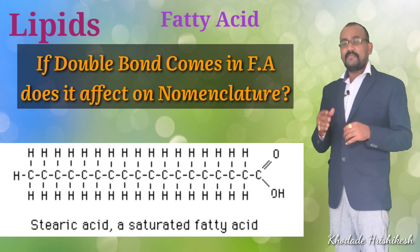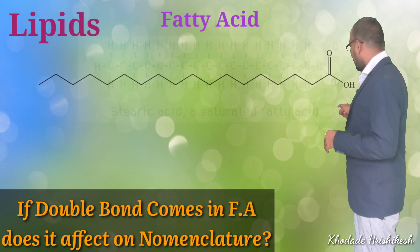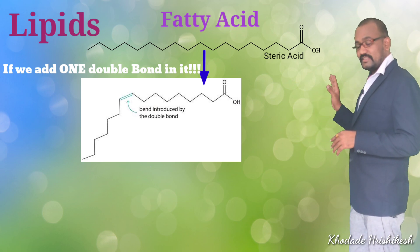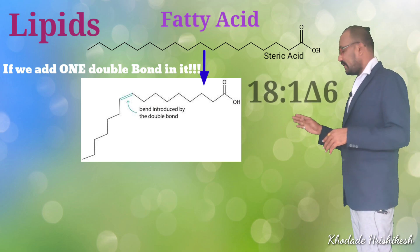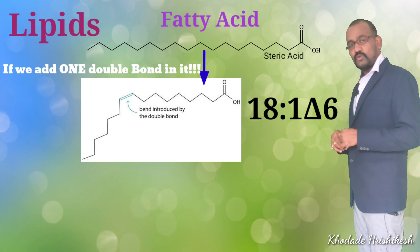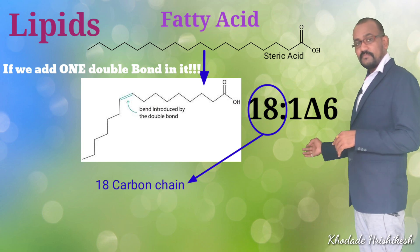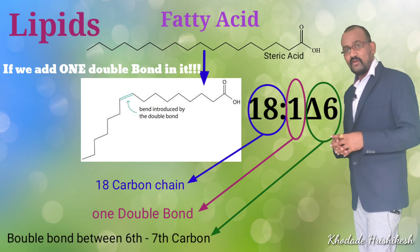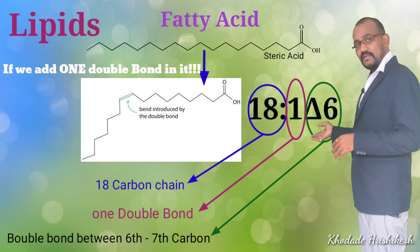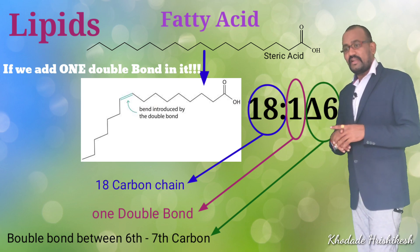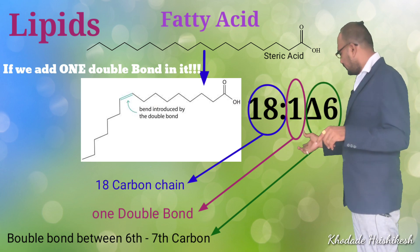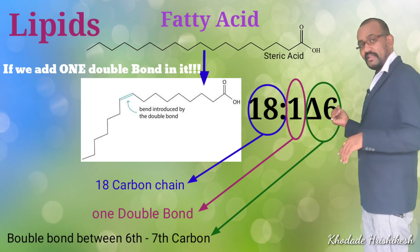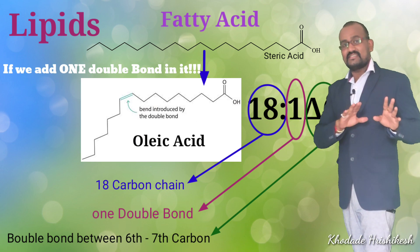What happens if a double bond comes into an 18-carbon fatty acid chain, which is normally stearic acid? We can write this as 18:1 Δ6 — meaning 18-carbon chain, one double bond, and the double bond is located between the sixth and seventh carbon. This is the nomenclature system for fatty acids; you cannot draw the full chain every time. Once one double bond appears in an 18-carbon fatty acid chain, the name changes from stearic acid to oleic acid.